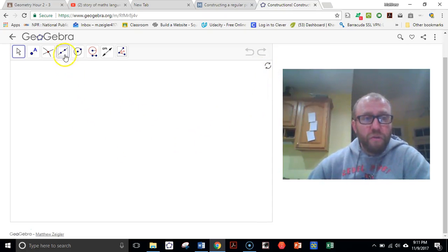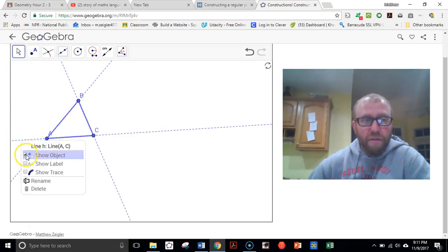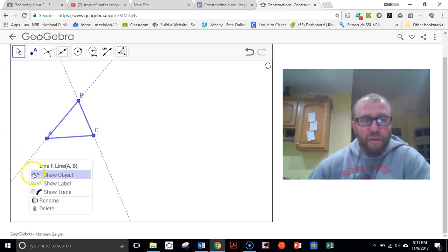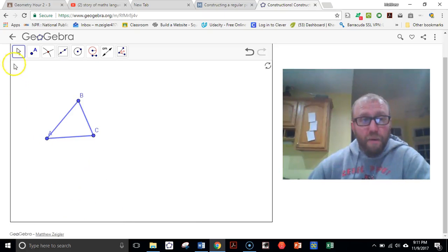First thing we need to do is draw a triangle. So I'm just going to draw triangle A, B, C here. I'm going to go back in and just hide these lines here. I don't need all these extra lines. I'm going to hide those. Now we just have a triangle.